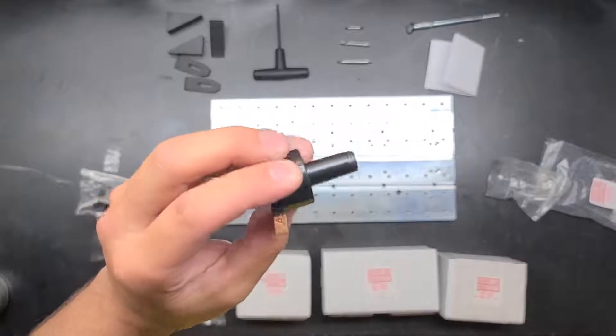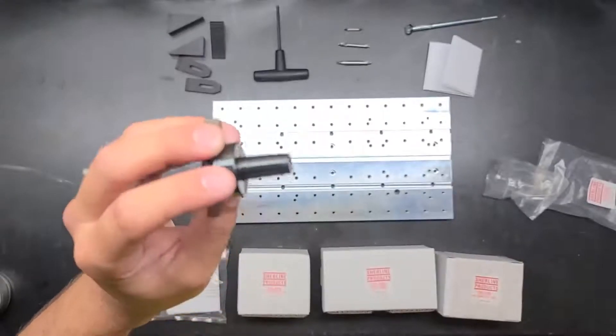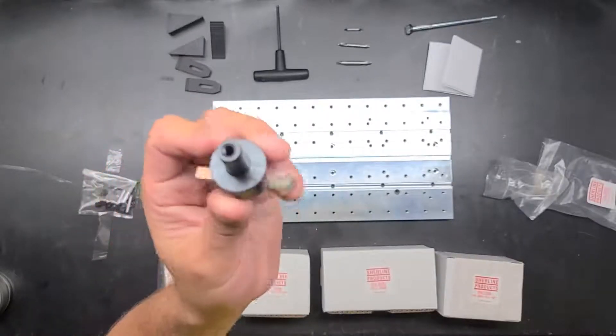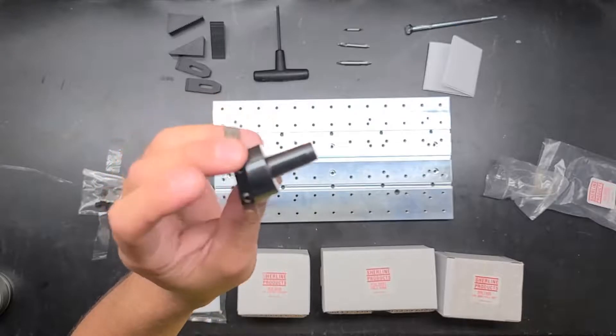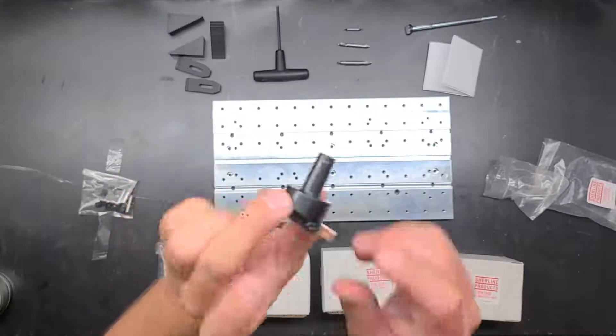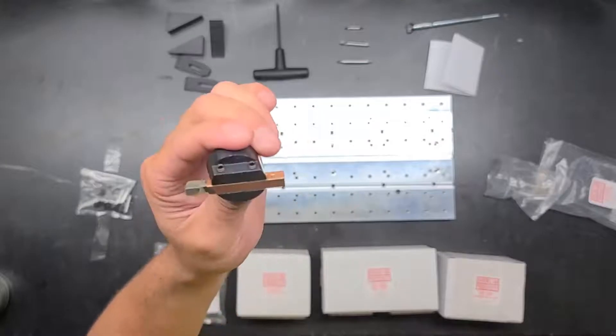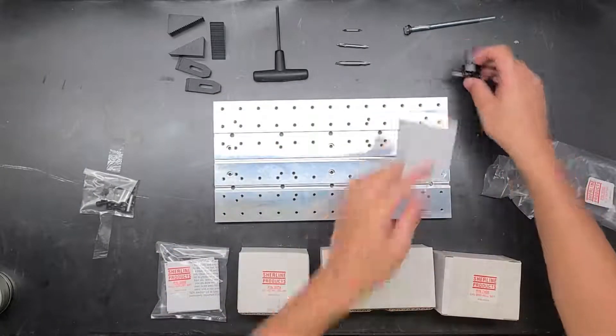You can see the cutter here. The spindle for the Sherline should be a number one Morse taper. So that's the fly cutter.